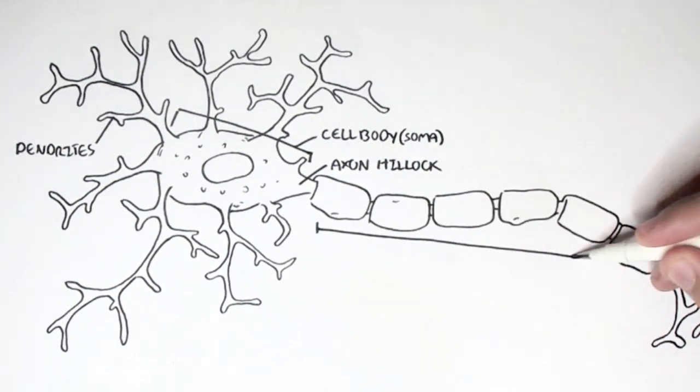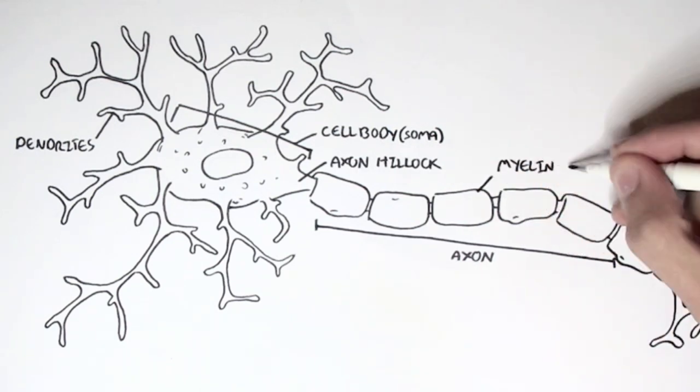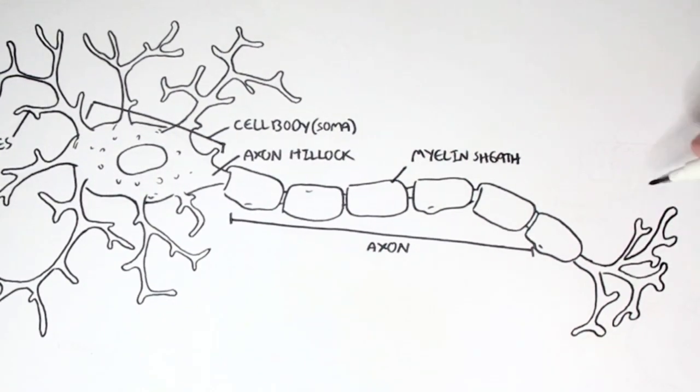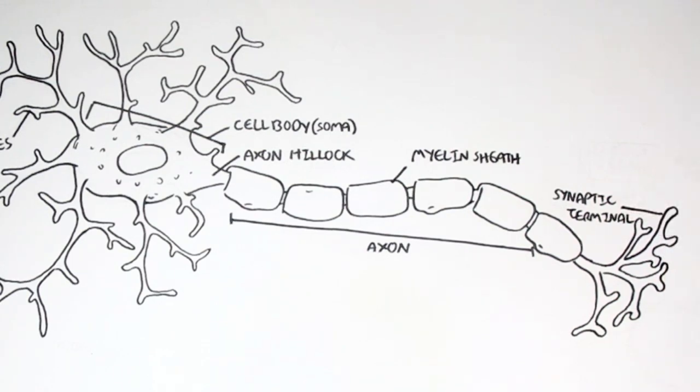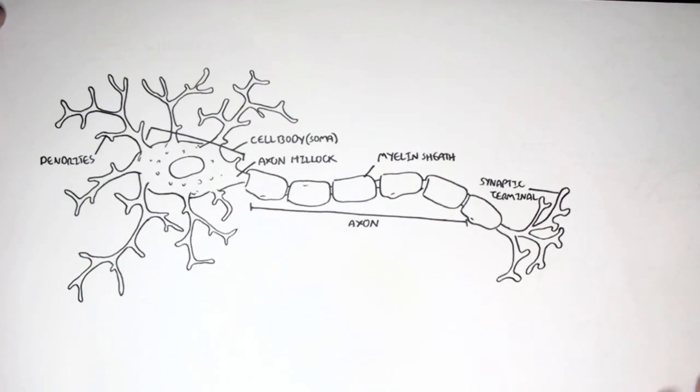The axon, where information or the signal in the form of an impulse is propagated through. There can be myelin which wraps around the axon to help in insulation and speeding up the impulse. And all the impulse will end at the synaptic terminal, where the impulse, the information, is passed onto a target cell.